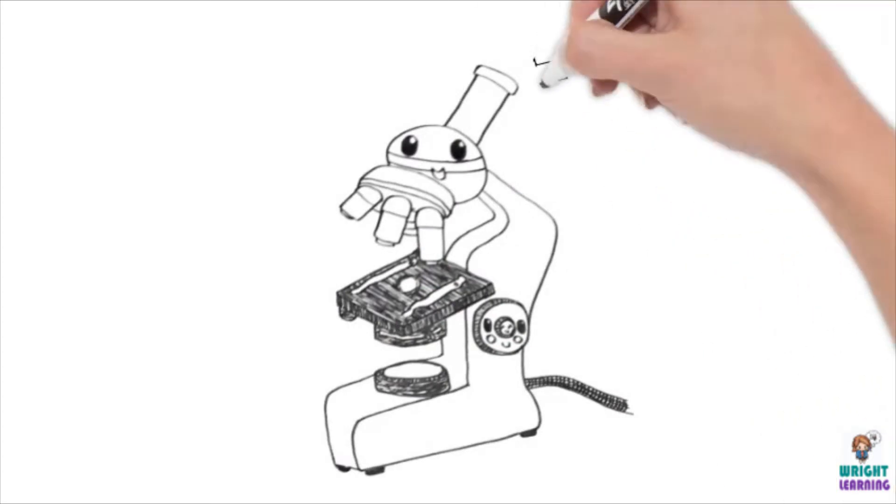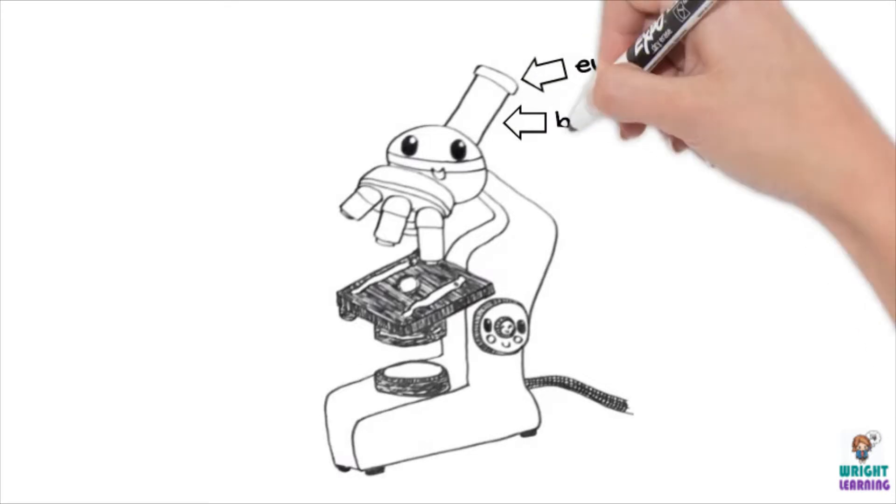Light microscopes may have one or two eyepieces, which have a magnification of x10. This is connected to the body tube, which bends light and allows us to see our sample.